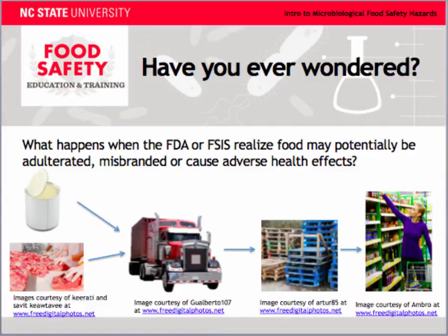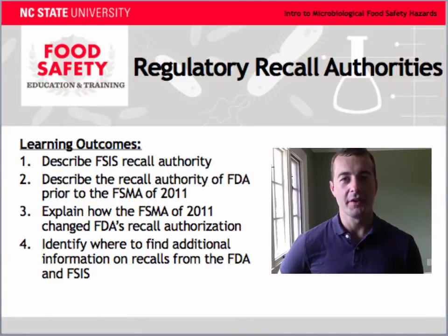Have you ever wondered what happens when the FDA or FSIS realizes that food may be potentially adulterated, misbranded, or cause adverse health effects once it is placed into the marketplace? Many foods are distributed from the processing facility to grocery outlets within a matter of days or even hours.